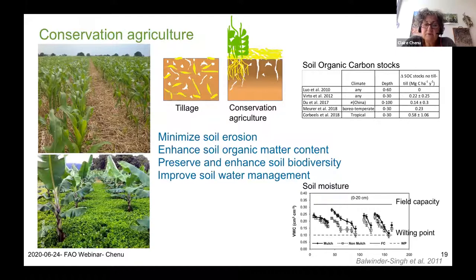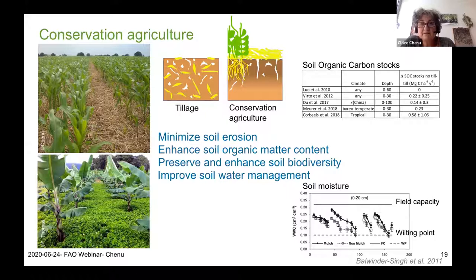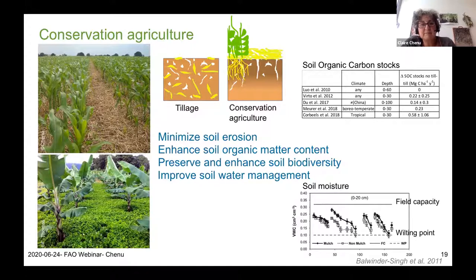Conservation agriculture has been shown to preserve and enhance biodiversity and improve soil water management. An example from rice crops in India shows that soil moisture is always higher under conservation agriculture with a mulch compared to reference plots without a mulch. The presence of a mulch allows better preservation of water and hence better adaptation to climate change.